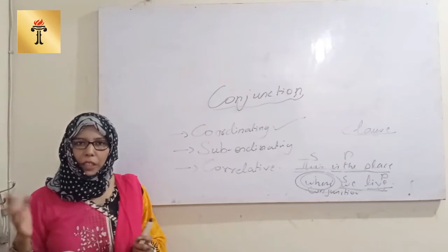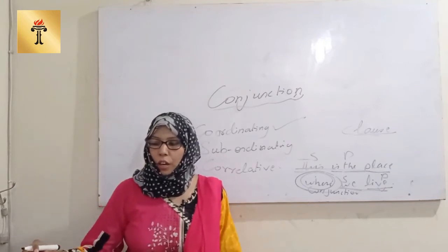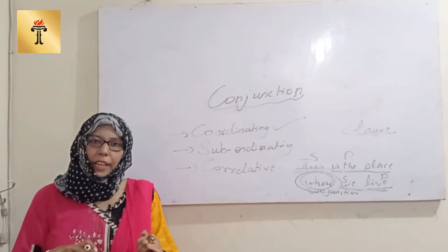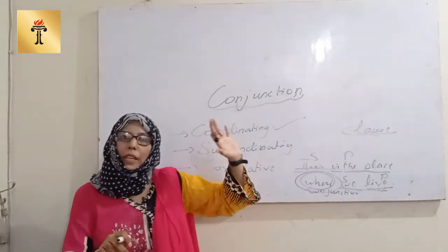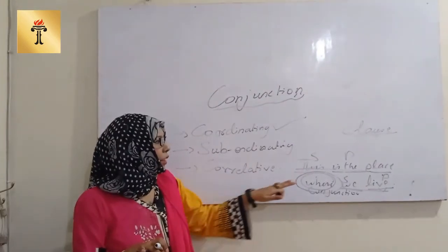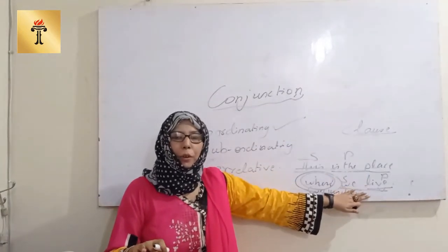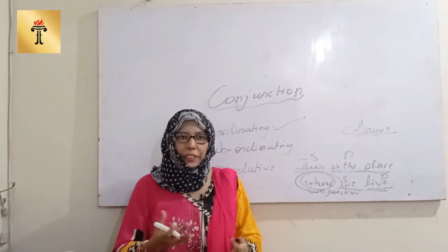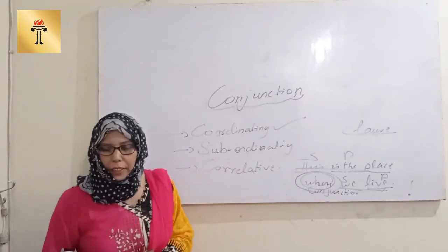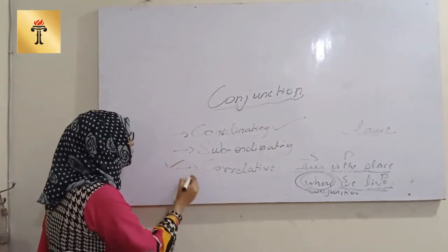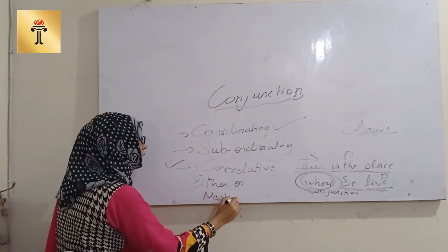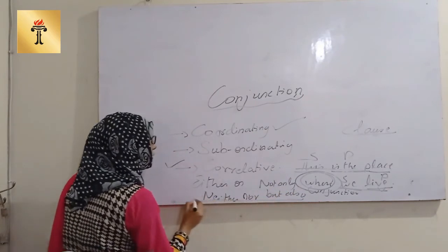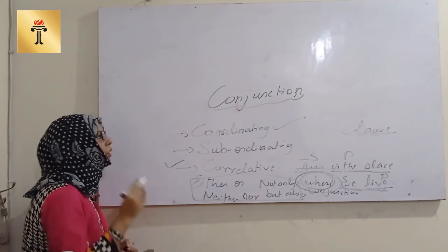The second type is subordinating conjunctions. Subordinating conjunctions are those in which sentences are joined but one is a principal clause and the other is a dependent clause. The principal clause exists on its own, while the subordinating clause depends upon the other to exist. The third type is correlative conjunctions — conjunctions which are used in the form of groups, such as: either/or, neither/nor, not only/but also.